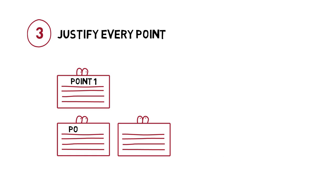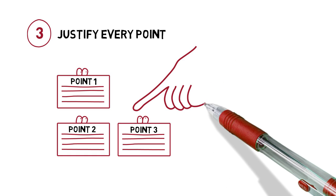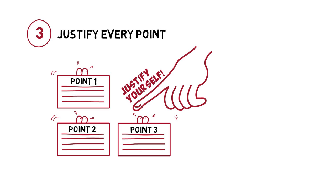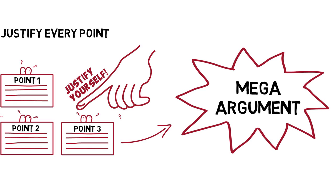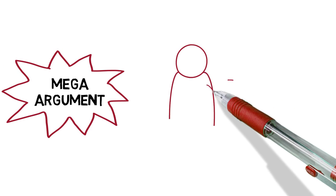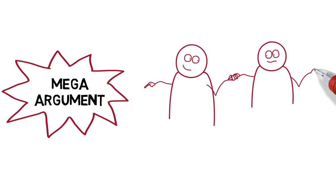As part of that argument, you need to justify the inclusion of every single point you make. Each of these points or mini-arguments, which will be in separate paragraphs, must add up to your mega-argument. Within every paragraph, you must justify the inclusion of the point by explaining to the reader the relevance it has to your mega-argument. You must metaphorically take the reader by the hand and lead them through your reasons for thinking the point is important.